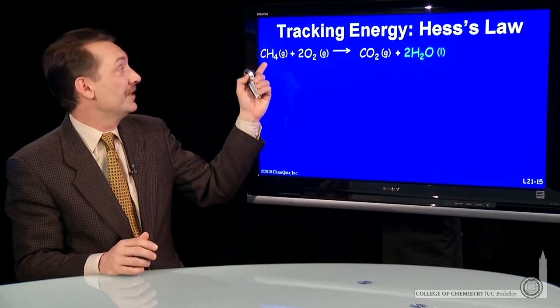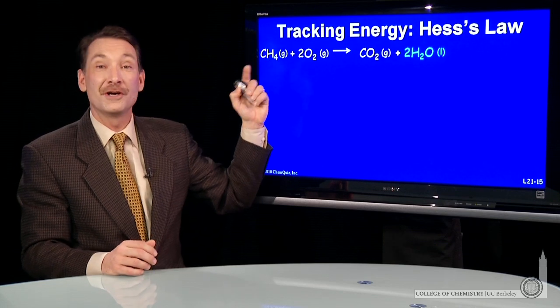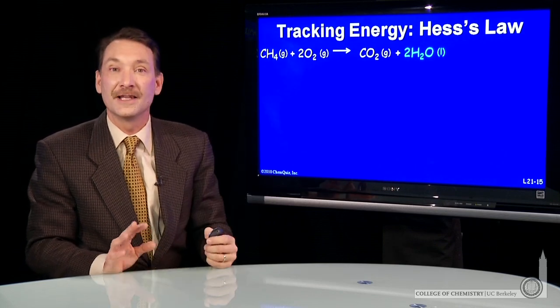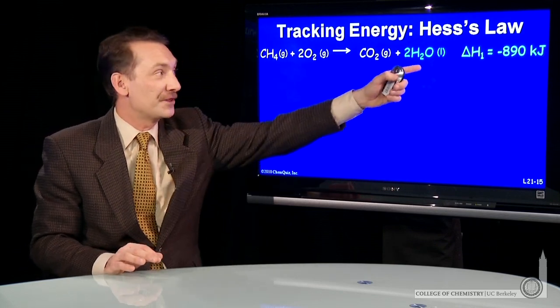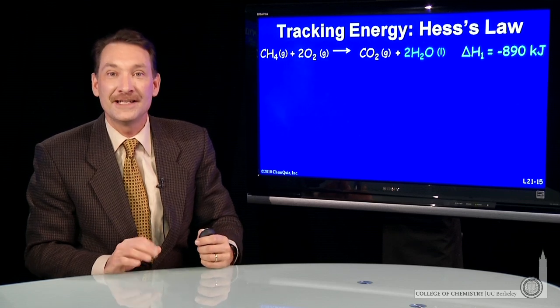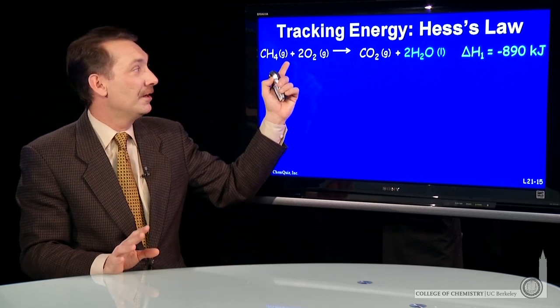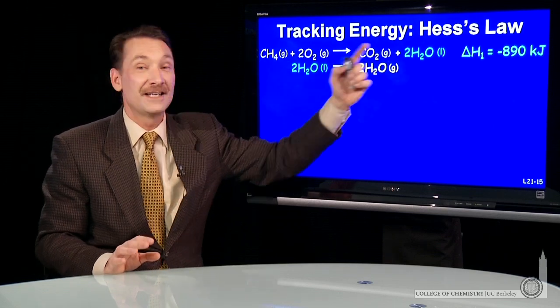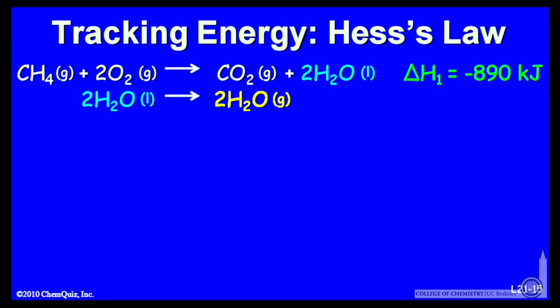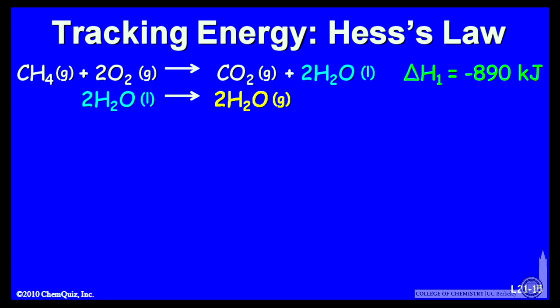So let's just do that. Here's a process, methane burning in oxygen to give carbon dioxide and liquid water. The enthalpy for that is -890 kilojoules. Now, let's say I wanted to have the burning of methane produce gaseous water. Well, I know how to convert liquid water to gaseous water. I can look up that enthalpy. For two moles, that's 82 kilojoules.